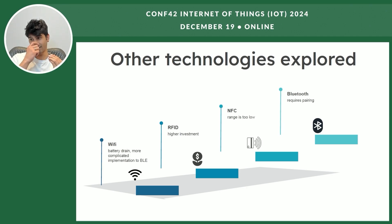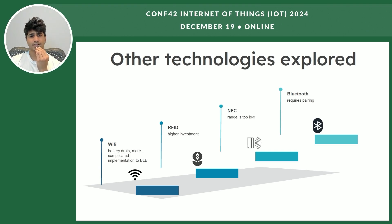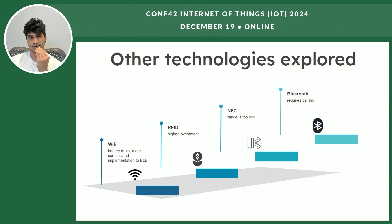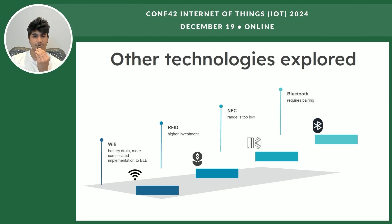Other technologies we looked into included Wi-Fi, RFID, NFC, and normal Bluetooth. Wi-Fi had significantly higher battery drain and was more complicated to work with than Bluetooth Low Energy, especially on iOS. RFID would require higher hardware investment, and NFC had the issue of low range. Traditional Bluetooth had changed its APIs so that the MAC address broadcast by the device is a temporary MAC address — done to prevent advertising companies and malls from uniquely identifying devices or users. Because of this change, we couldn't use it for identifying users based on MAC address, so we had to go with Bluetooth Low Energy given these limitations on other technologies.